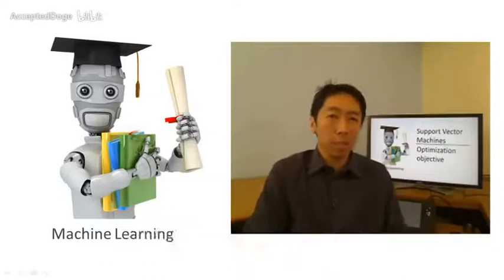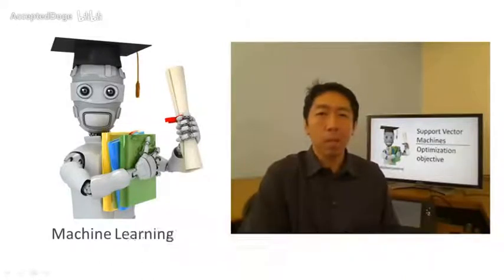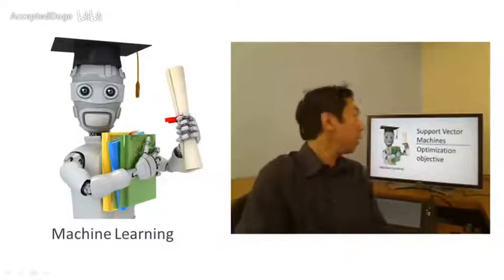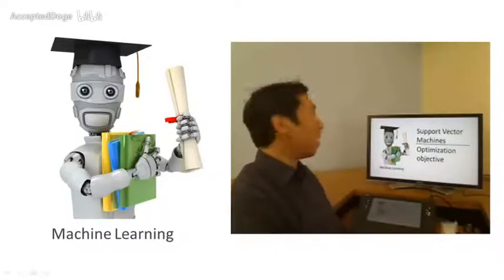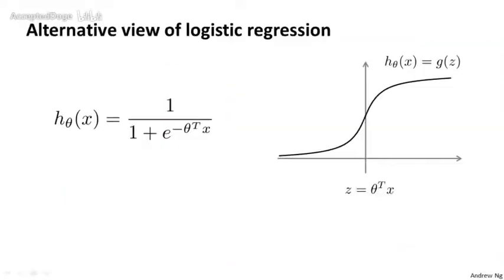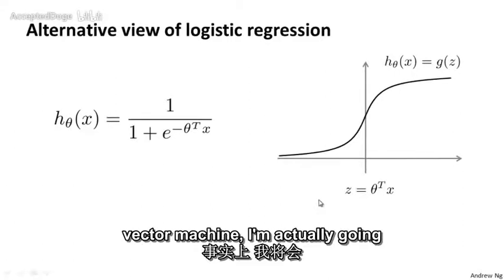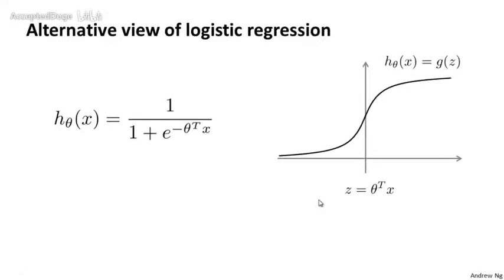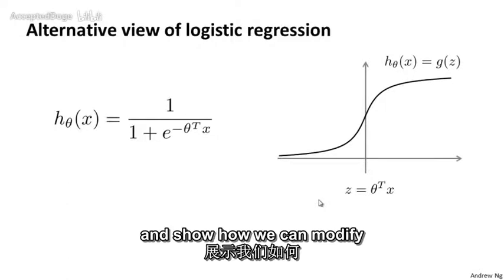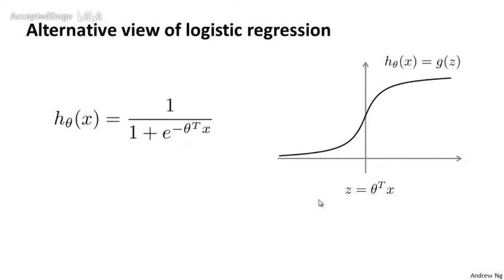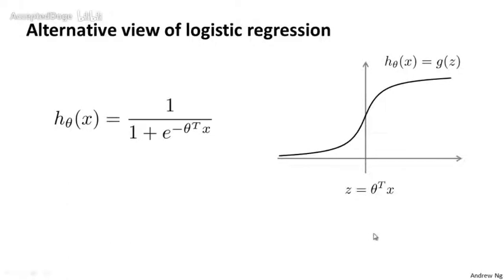As with our development of other learning algorithms, we're going to start by talking about the optimization objective. In order to describe the support vector machine, I'm actually going to start with logistic regression and show how we can modify it a bit to get what is essentially the support vector machine.